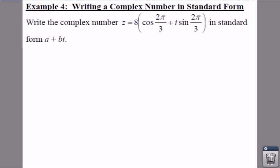So what we did in examples 2 and 3 is we wrote a complex number in trig form. Well, what about writing a complex number in standard form? So standard form is just your a plus bi. So what we're going to do is we're going to go backwards.